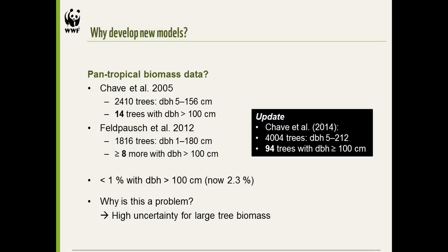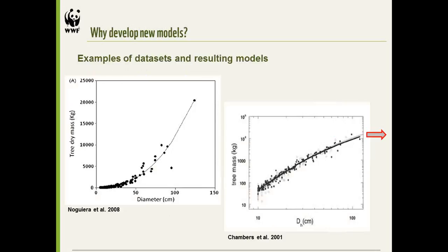One reason for this range is the general lack of large trees in the database. In Chave 2005, only 14 trees had diameter greater than 100 centimeters. In the updated Chave equations, over 4,000 trees were added with 94 greater than 100 centimeters DBH — going from less than 1% to 2.3% of trees with diameter greater than 100 cm, which is still quite small. There is still really high uncertainty for large trees.